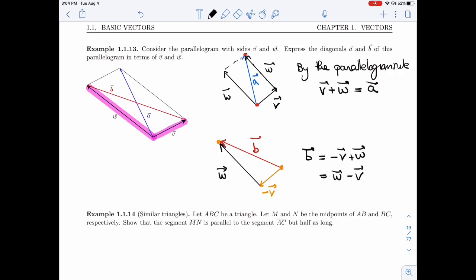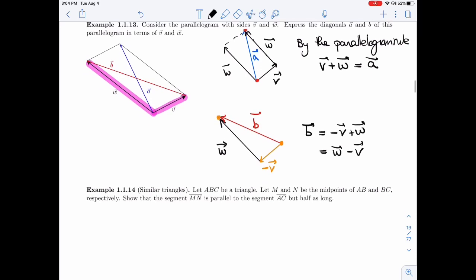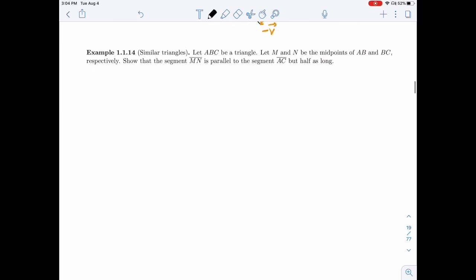So one of the diagonals is the sum of the vectors, the other one is the difference. If I switch V and W, that's like switching the orientation of V, I still get a diagonal.